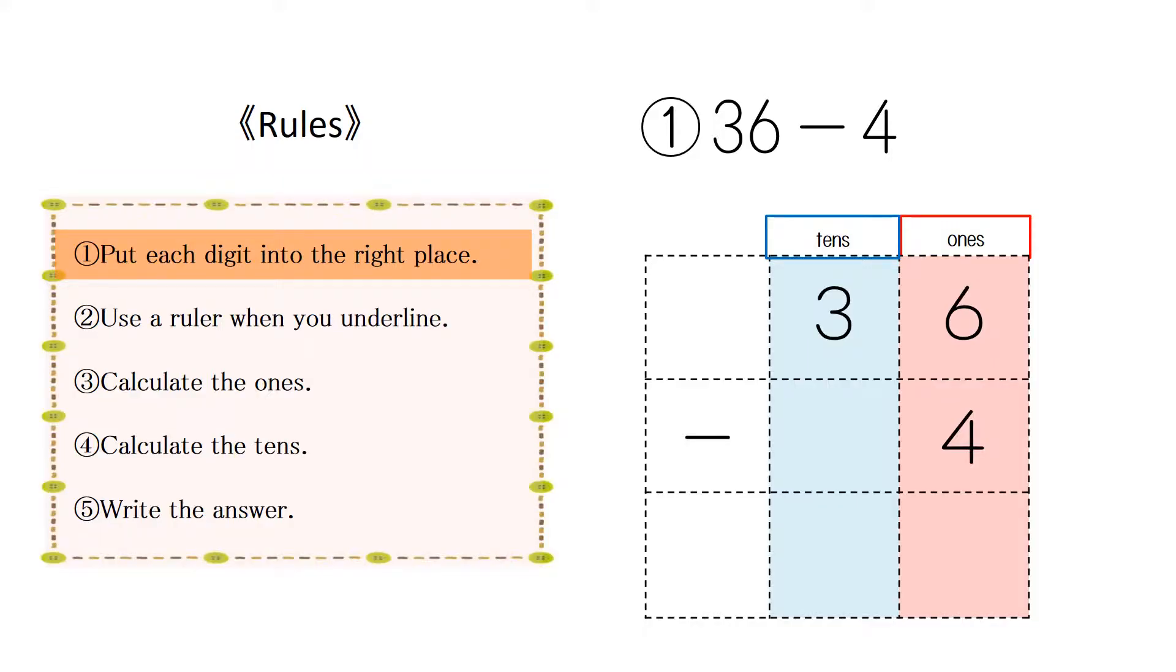Put a digit into the right place when you use calculation on paper. Both 6 and 4 are ones, so write like this figure. Next, use a ruler when you underline, like this.